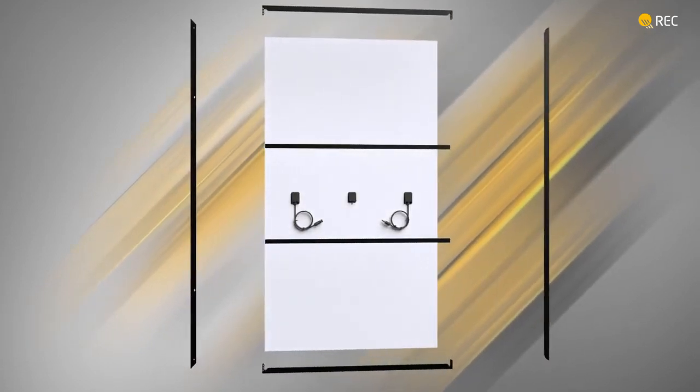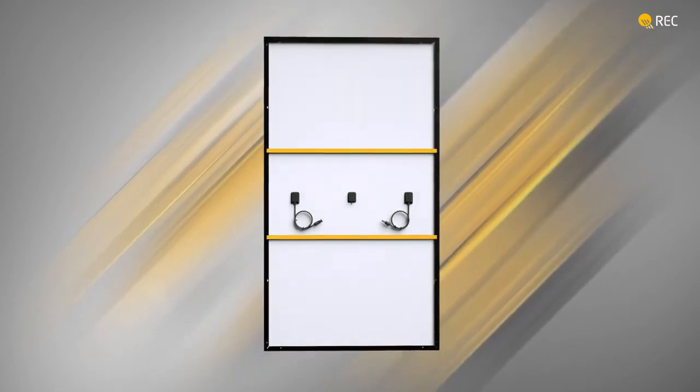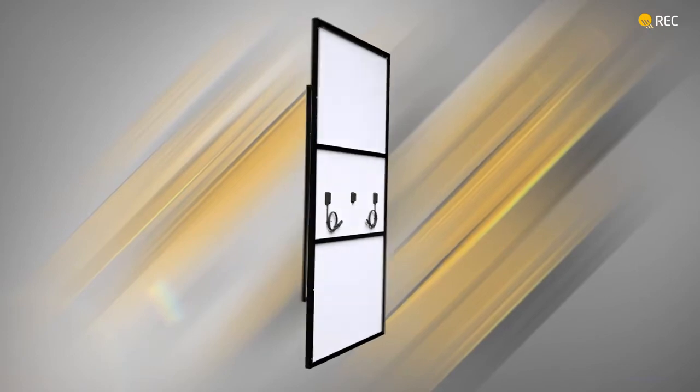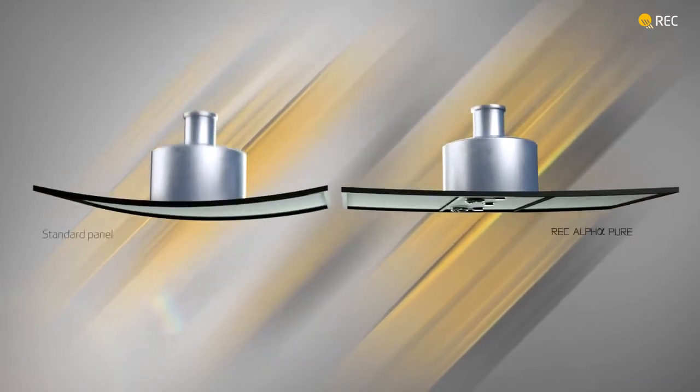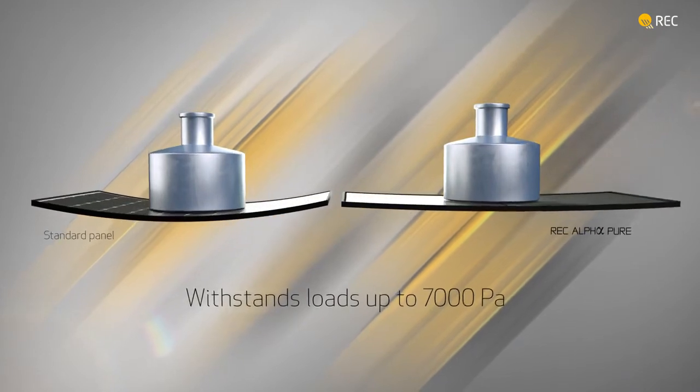The REC Alpha Pure uses a super-strong frame design with two support bars across the rear, an innovative way of improving the durability and longevity of the panel. This increases the panel's ability to withstand extreme loads.